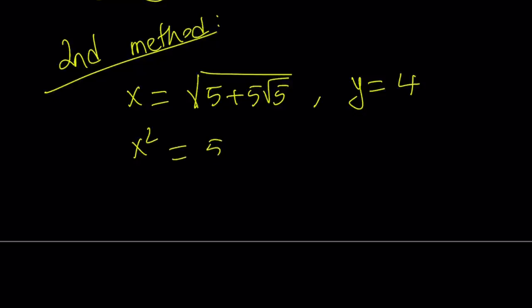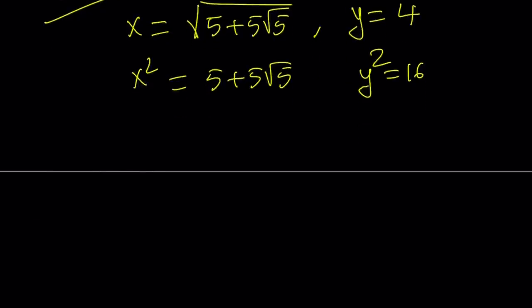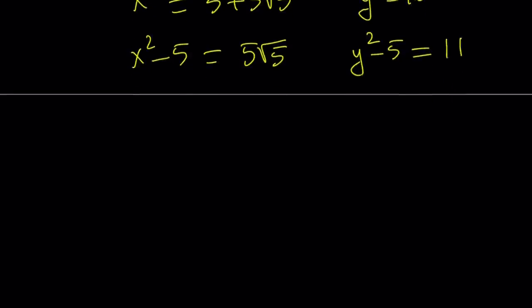So, square both sides. You'll hopefully get the idea. And then subtract 5 because I want to isolate the radical and then I'll square again. But whatever you did here, do it here as well. So, y squared minus 5 is going to be 11. Awesome. You get the idea? Okay.